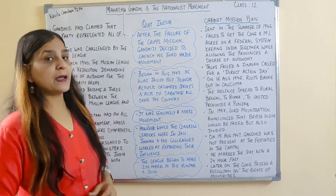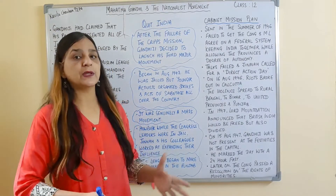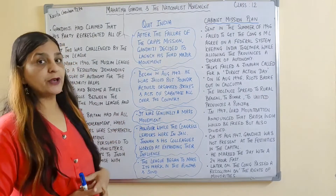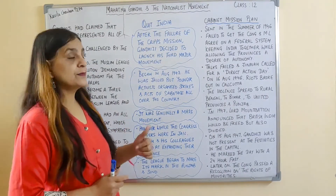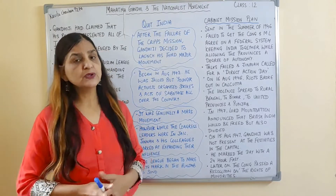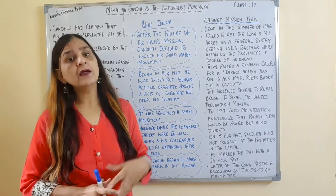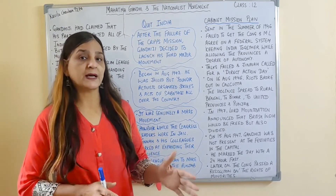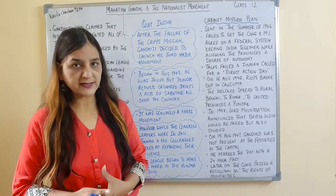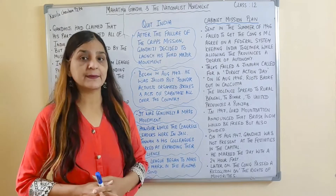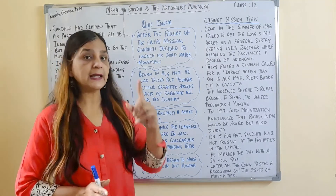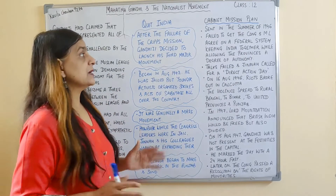The British government sent the Cabinet Mission Plan to India in the summer of 1946, as independence was now a final matter. However, it failed to get Congress and the Muslim League to agree on a federal system keeping India together while allowing the provinces a degree of autonomy. The talks failed — Congress and the Muslim League could not accept a federal structure with provincial autonomy that would keep India united.